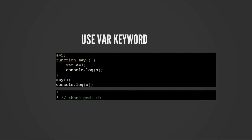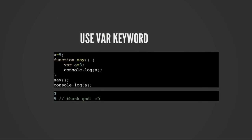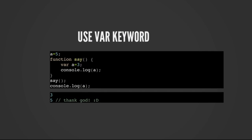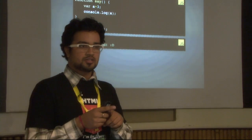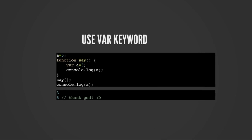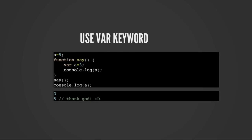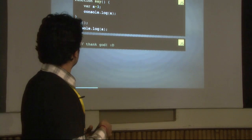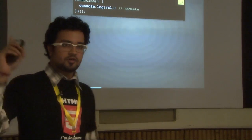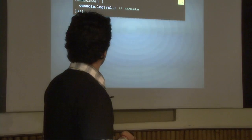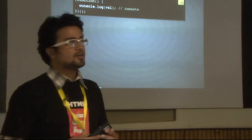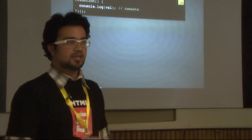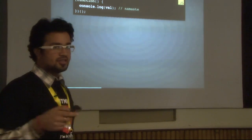How can we overcome this issue? We have to use the var keyword. When we use the var keyword, the value of the variables are bound to the scope of the function. In this case, `a` is 3 inside the function, and in the global scope it's 5. So the basic idea is we should never miss the var keyword — we should use it whenever we initialize a variable.